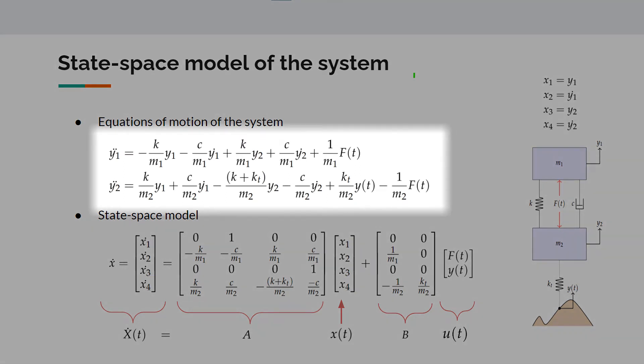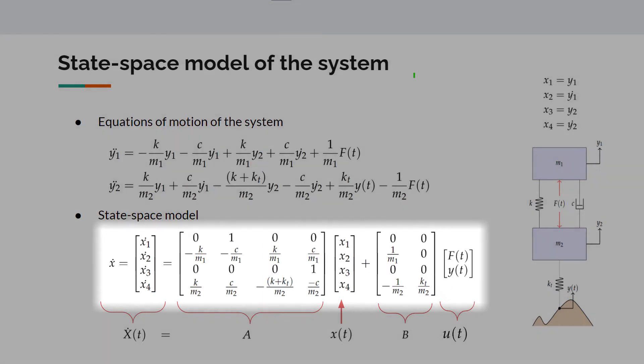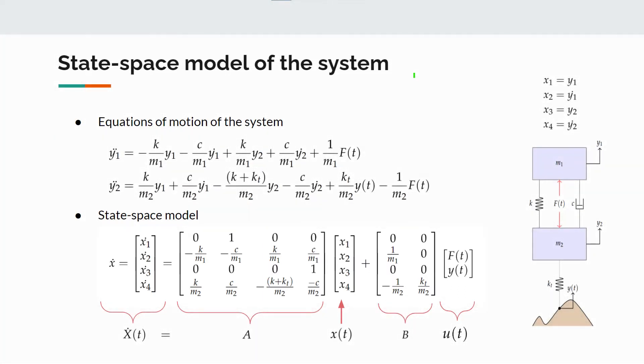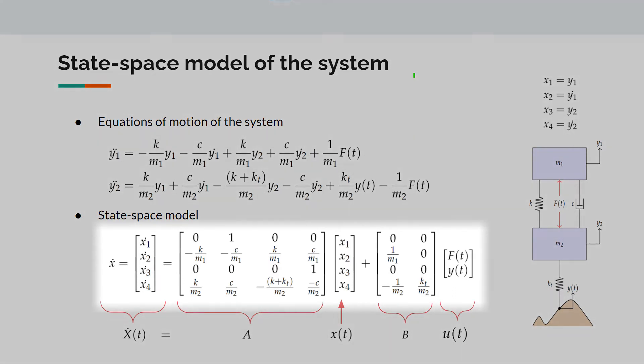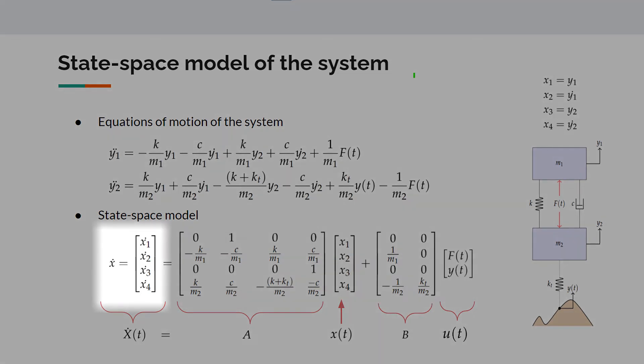These are the equations of motion of the system that we have previously rearranged. Then we have to convert these equations of motion into the state space model as seen here. Now we have a system of four first order differential equations. Basically, this model represents how a set of state variables change with time according to the states of the system itself and according to the external inputs.